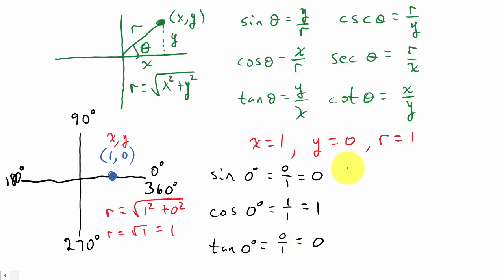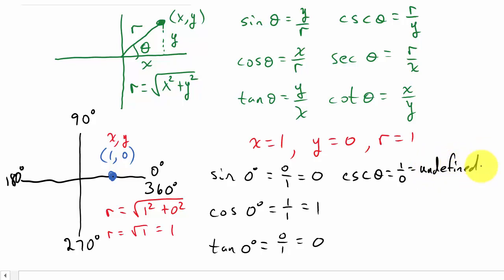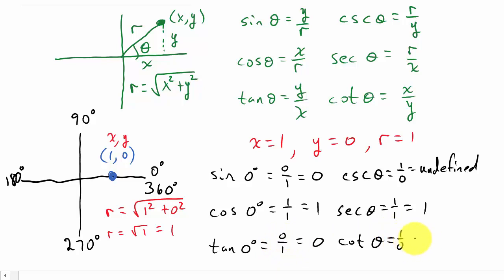And then cosecant 0 degrees — we know that's just the reciprocal. So if we flip sine, that's 1 over 0. What do we get when we have 0 in the denominator? That's undefined. And then secant 0 degrees — cosine is 1 over 1, so if we flip that, that's 1 over 1, which is 1. And cotangent 0 degrees — if we take the reciprocal of tangent, that's 1 over 0, and that is undefined.